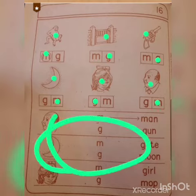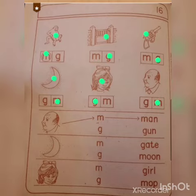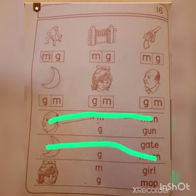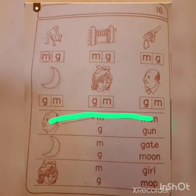This activity is the same as I did on the previous page. For example: M-A-N, man; M for moon; girl, girl. You have to join it like this. These are the two pages of the GIN workbook.